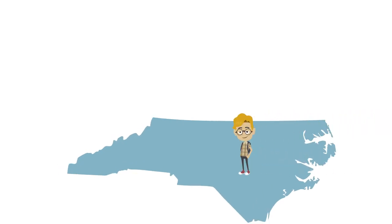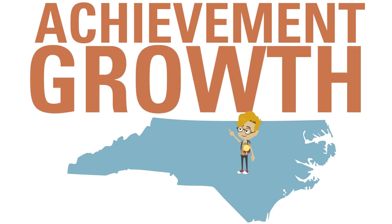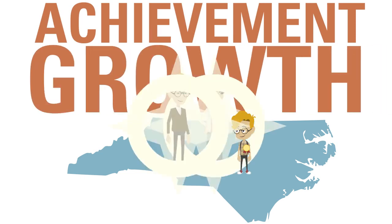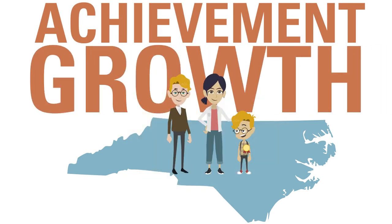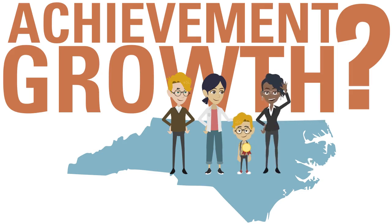In North Carolina, student academic performance is measured in two ways: achievement and growth. Chances are you've heard these words before. But what are achievement and growth? How are they different? And what do they tell us about our students and teachers?